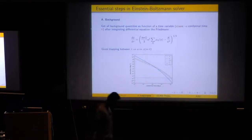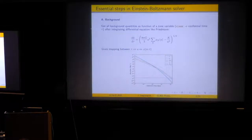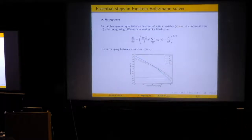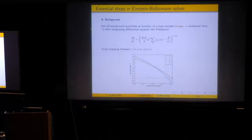An Einstein-Boltzmann solver will always go through a series of steps labeled here from A to H. Step A is the integration of the background: the code must integrate the homogeneous universe, the background cosmology, as a function of time. This is done in CLASS as a function of conformal time, denoted tau, mainly by integrating the Friedmann equation. Once you have done this, you have the correspondence between a and tau, and there is always a trivial correspondence between a and z, so you can convert tau to z and back. The module also keeps track of proper time.